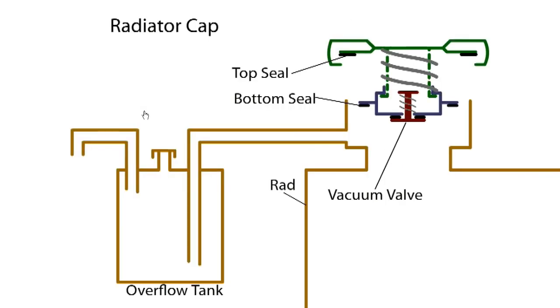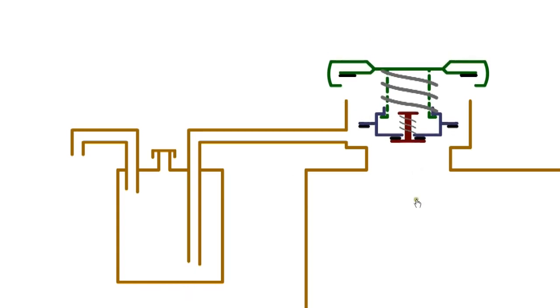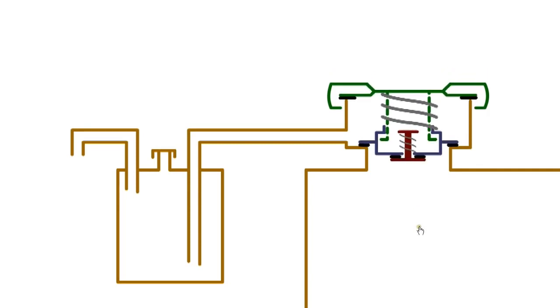The radiator pressure cap is used to pressurise the system to a specific overpressure which raises the boiling point of the coolant. It also acts as a pressure relief valve preventing damage to hoses and connections. When water heats up, it expands. A spring-loaded valve in the cap will release the pressure and the excess water is allowed flow to the expansion tank.